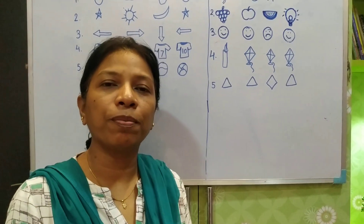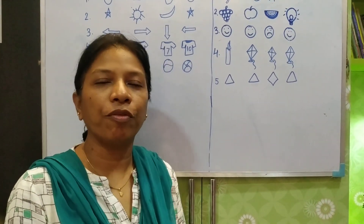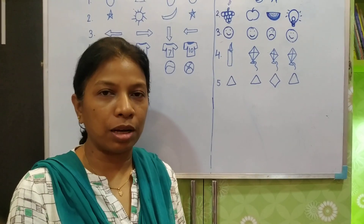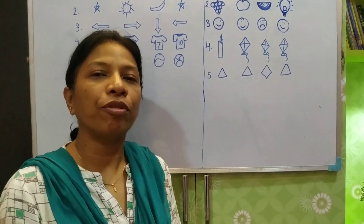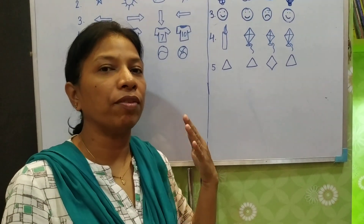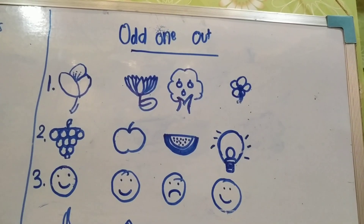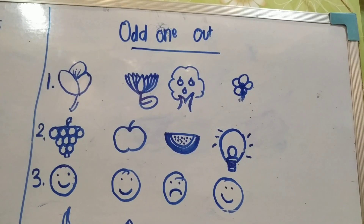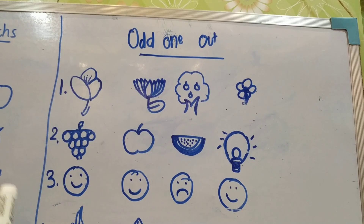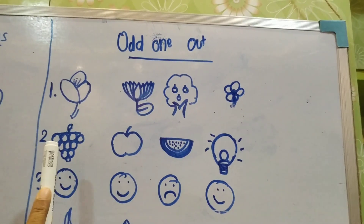Hello LKG children. In our previous video we had done odd one out. Before I go to the next topic, we will just revise once again what is odd one out. Odd one out is which is not fit in this set, which is different.